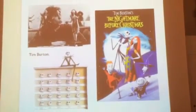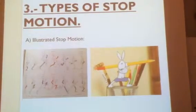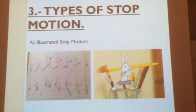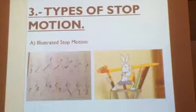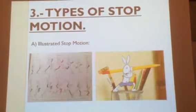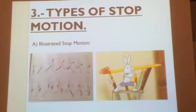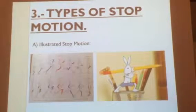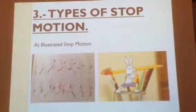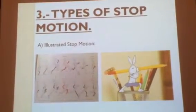That is all I would like to say about the origins of stop motion. Let's carry on to the next part. Stop motion can be classified into these categories. Category A: illustrated stop motion, where the animation is created using a series of photographs of illustrated drawings, creating the movement of the animation.